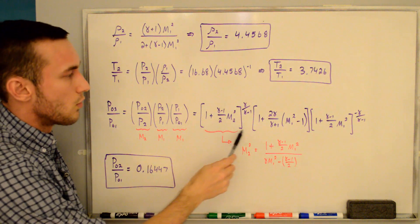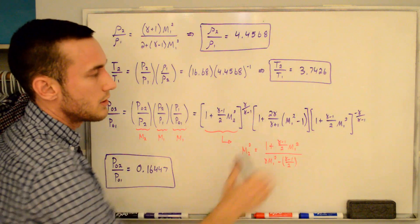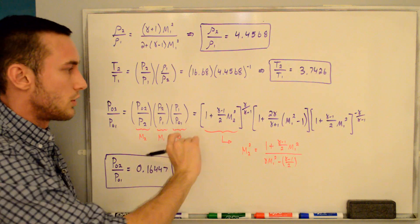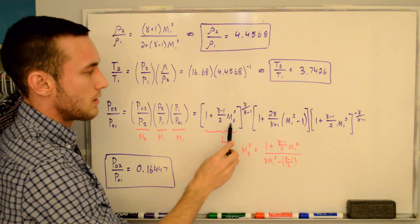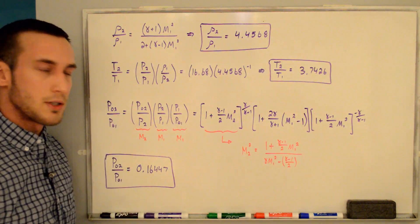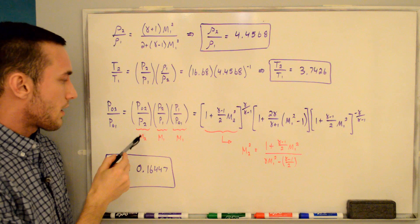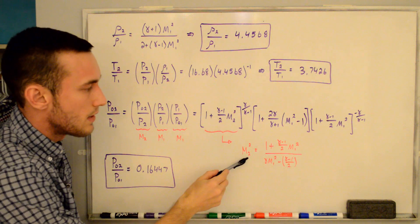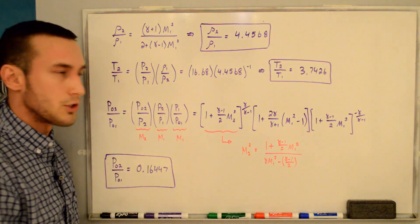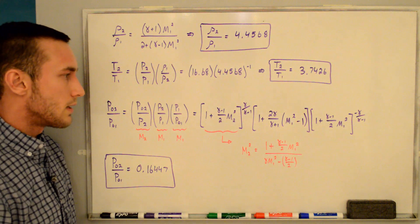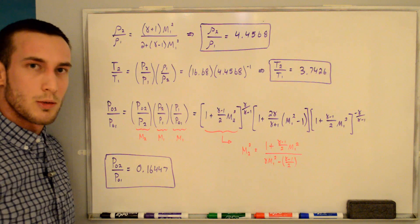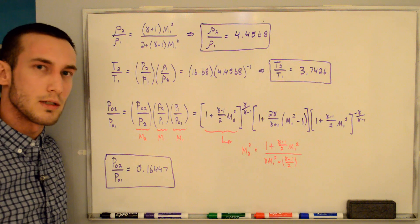Plugging in expressions for each term: (p02/p2) uses the isentropic relation evaluated at M2 downstream; (p2/p1) is the same expression from the previous whiteboard; and (p1/p01) is the isentropic stagnation-to-static pressure ratio evaluated at M1 with a negative exponent because it is flipped. Since M2 can be written as a function of M1 and gamma, this entire expression for p02/p01 is only a function of M1 and gamma. Plugging in the values gives a stagnation pressure ratio of 0.16447, confirming stagnation pressure decreases across a normal shock.